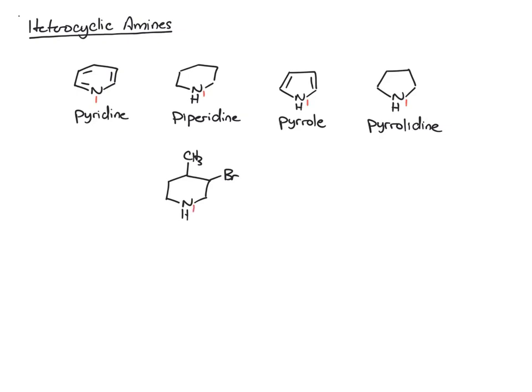Nitrogen would be one, and we just number around our ring. And, really nothing new here, alphabetize your substituent, follow it by the parent name. So we have 3-bromo, 4-methylpiperidine.